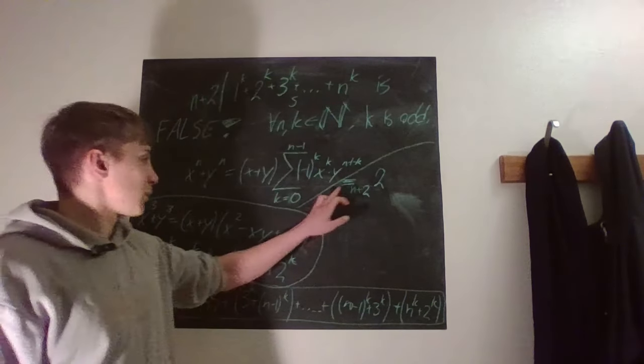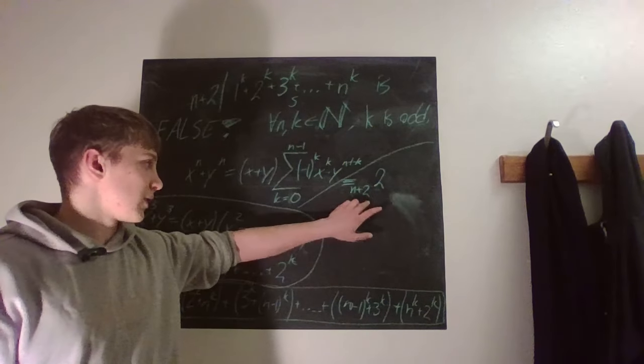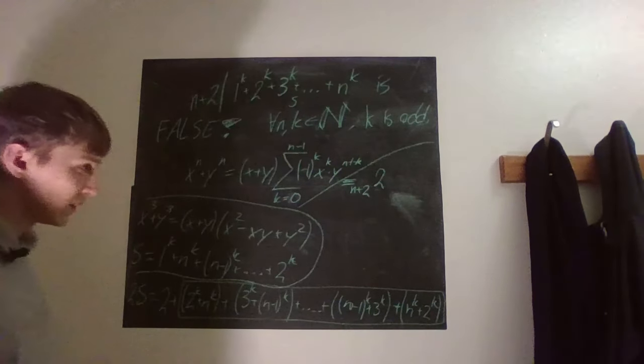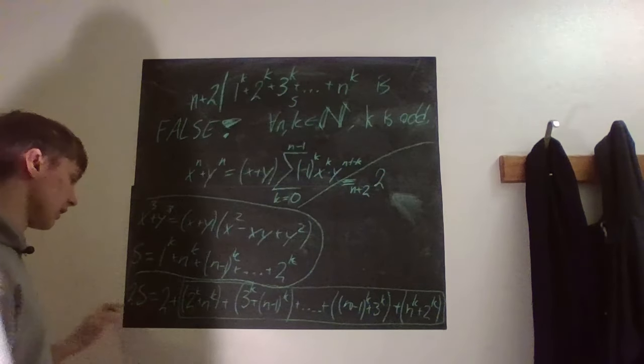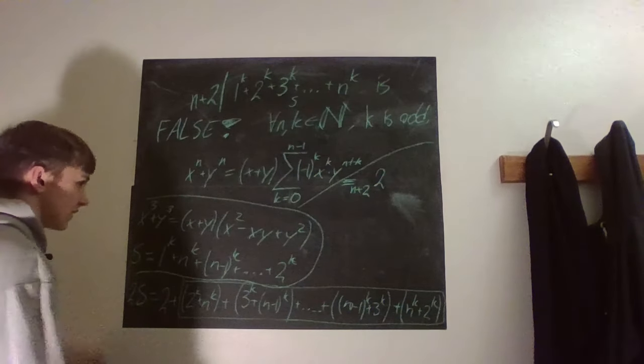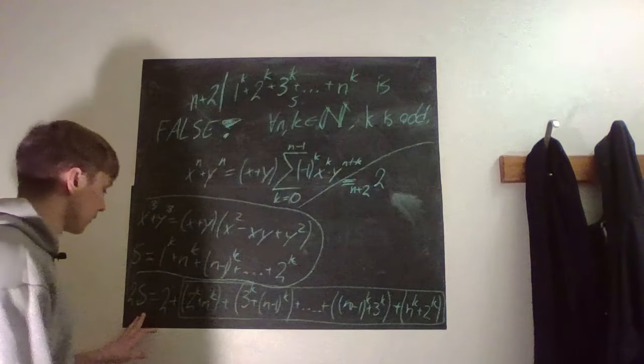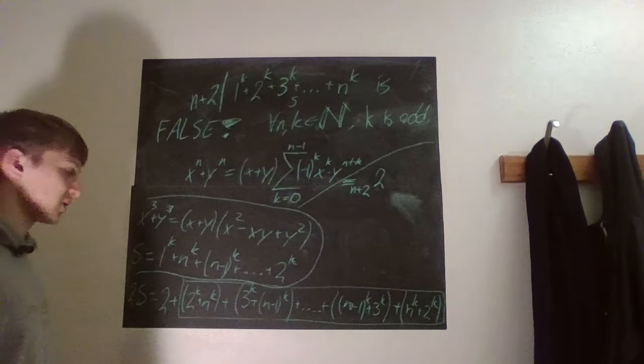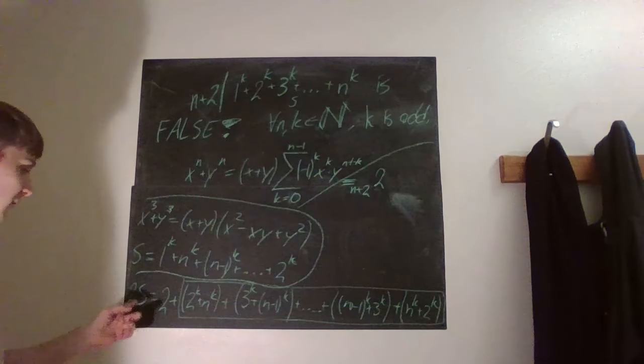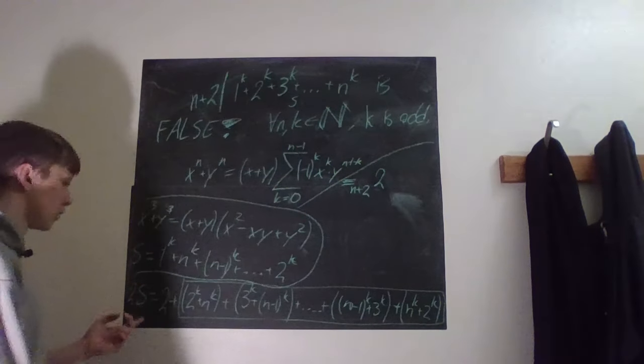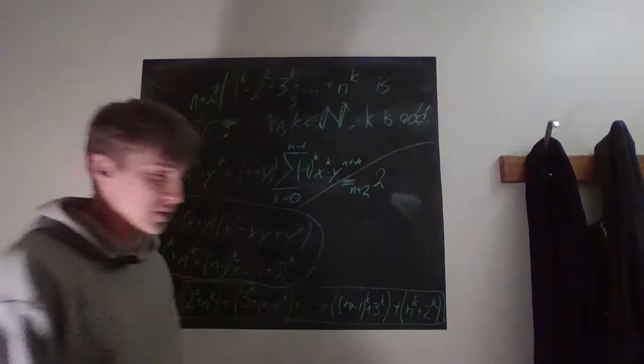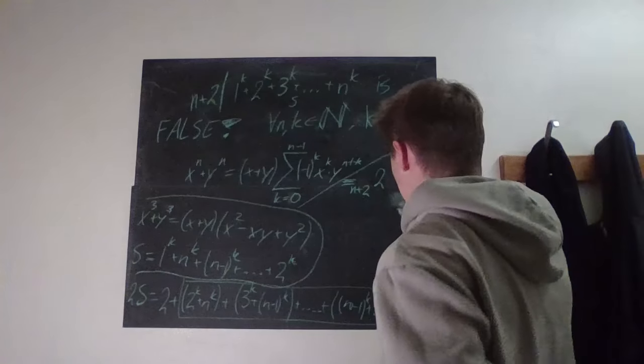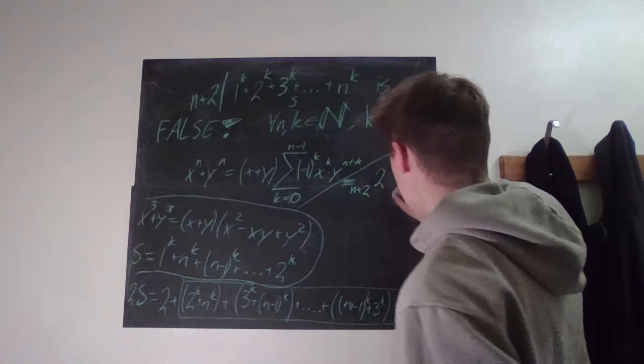Yes, we know that 2s with division by n plus 2 is equal to 2, and therefore we must also state we can obviously state that then of course s is not divisible by n plus 2. Because if it were, if s was divisible by n plus 2, then of course 2s would also be divisible by n plus 2. So this can never be the case.